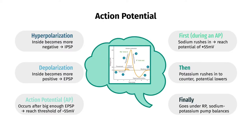Hyperpolarization is where the inside of the cell becomes more negative, causing an inhibitory postsynaptic potential, or IPSP. Depolarization is where the inside of the cell becomes less negative, or more positive, causing an excitatory postsynaptic potential, or EPSP. If the membrane potential at the axon hillock reaches negative 55 millivolts, the threshold, from a big enough EPSP, an action potential will occur.